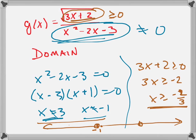How would you put that in interval notation? What does it have to be? It has to be greater than negative 2 thirds. So it's got to be from here.